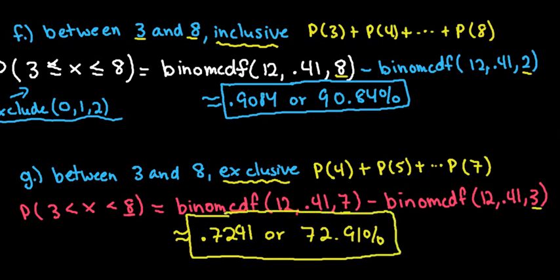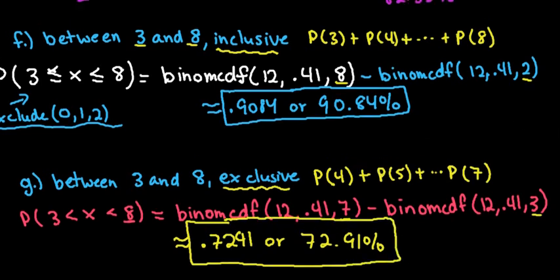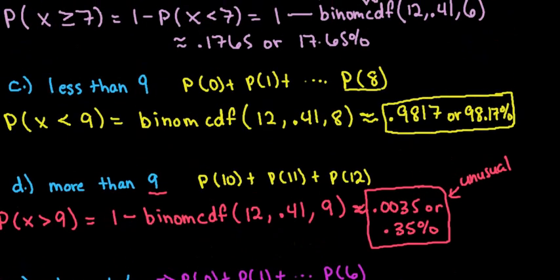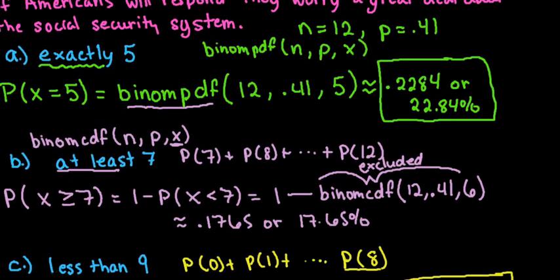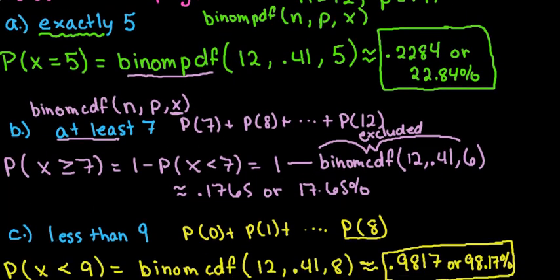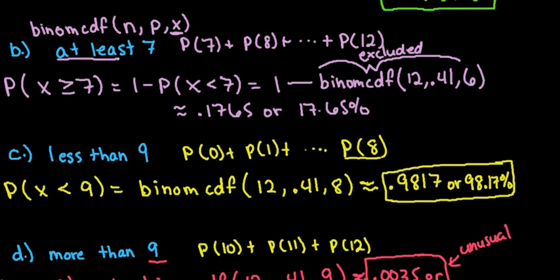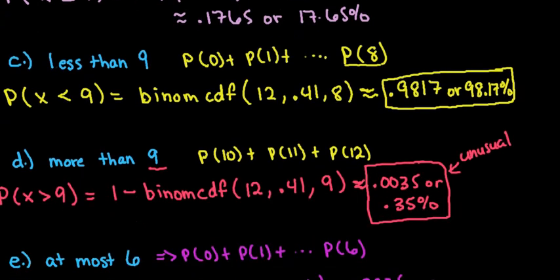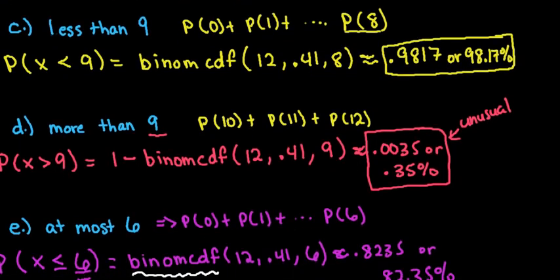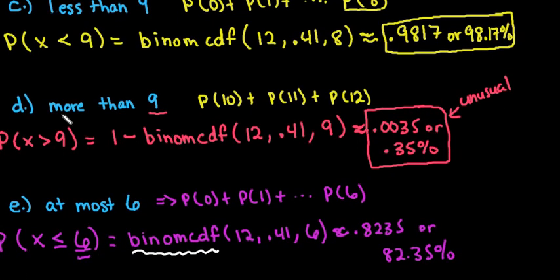To recap: if the problem says exactly, use binomPDF. For all other cases — at least, more than, less than, at most, between — use binomCDF since it's the cumulative distribution. Thanks for watching; if you have questions or need additional topics covered, please let me know.